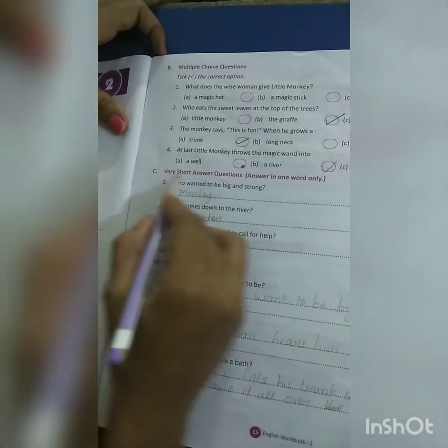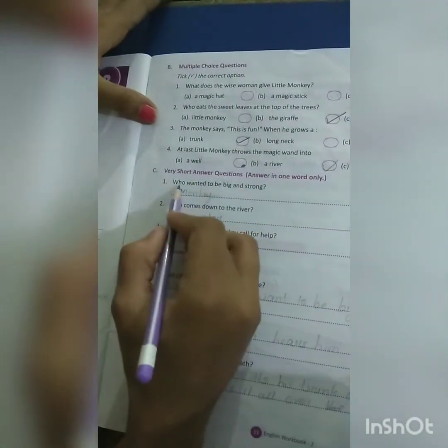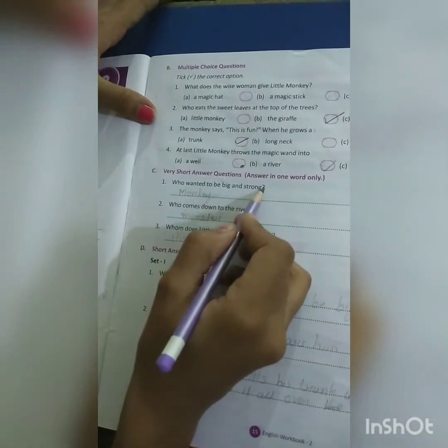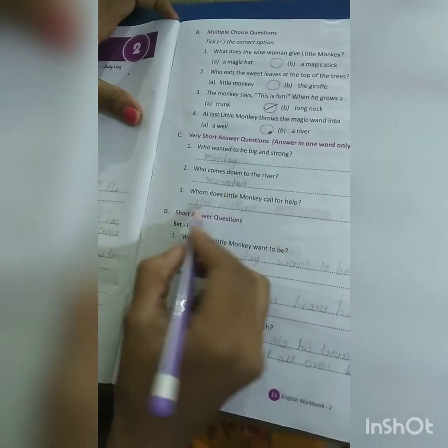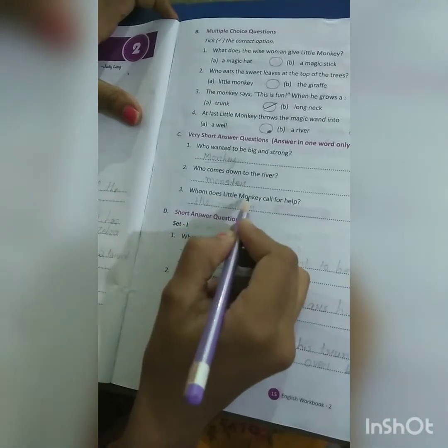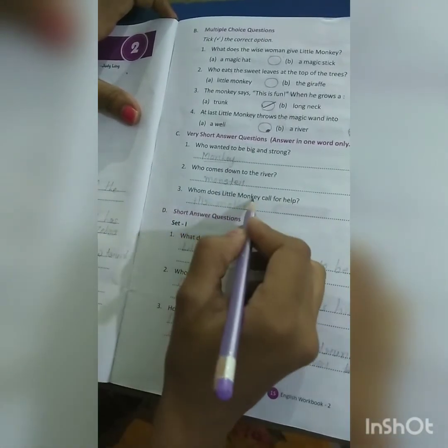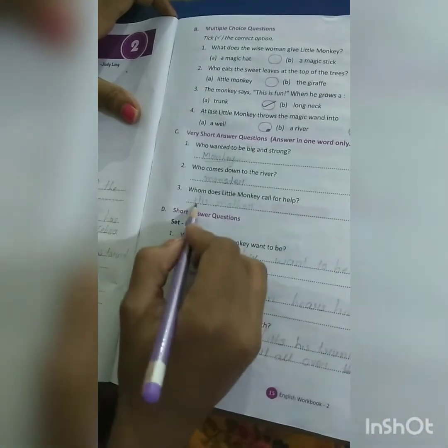Exercise number C, very short answer, one word answer. Who wanted to be big and strong? Monkey. Who comes down to the river? Monster. Whom does little monkey call for help? His mother.